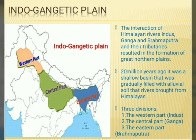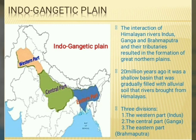Plain means flat and level land. The interaction of Himalayan rivers — Indus, Ganga and Brahmaputra — and their tributaries resulted in the formation of the Great Northern Plains. Twenty million years ago, it was a shallow basin that was gradually filled with alluvial soil that rivers brought from the Himalayas.